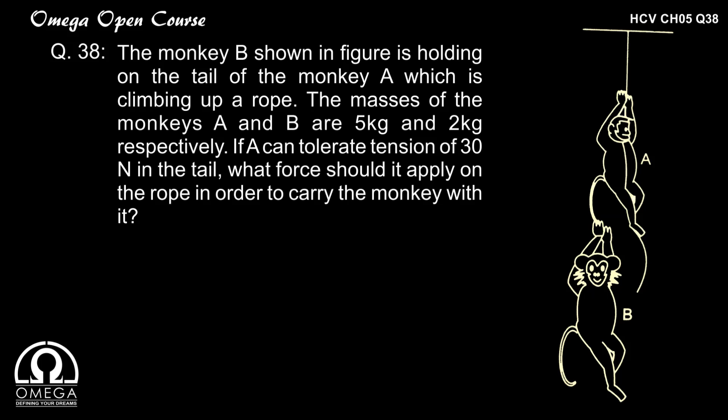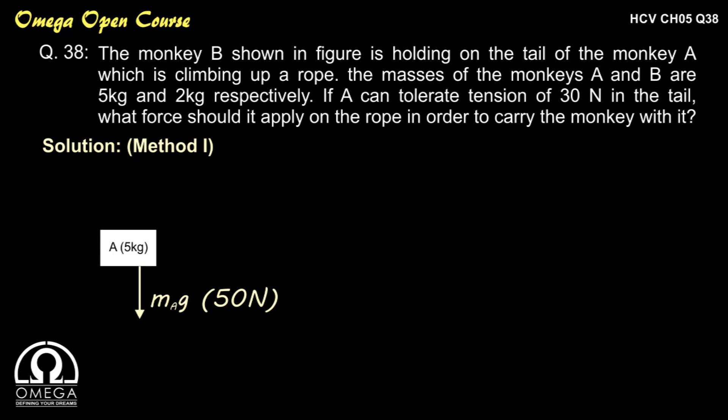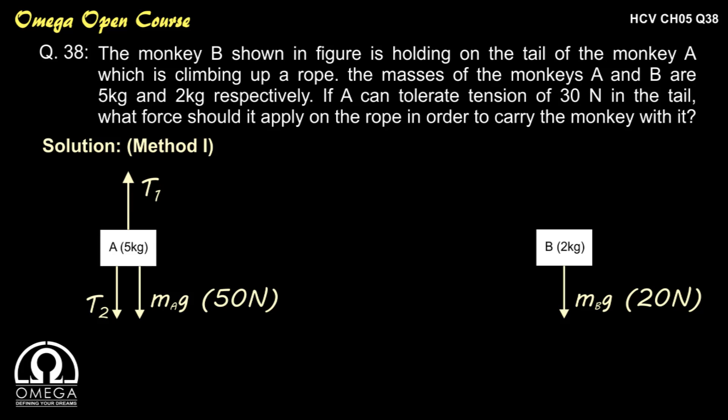This question can be solved by two methods. Method 1: Let's first draw the free body diagram of the two monkeys. For monkey A, the forces acting on it are the force of gravity M_A × g = 50 N, tension in the rope T1, and tension in its tail vertically downward T2. For monkey B, the forces acting on it are the force of gravity M_B × g = 20 N and tension in the tail T2.